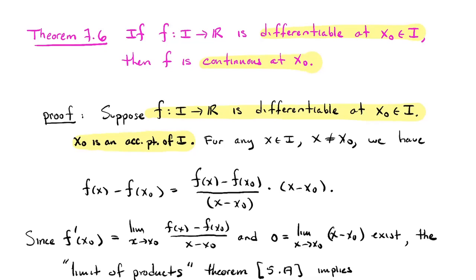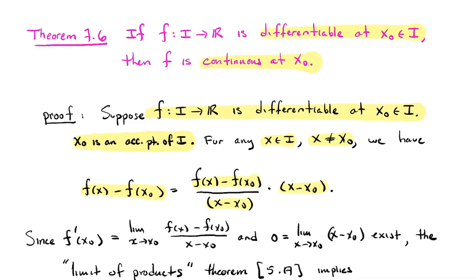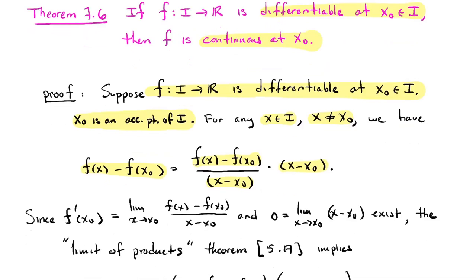I'm going to take a look at the difference f(x) − f(x₀). To show that f is continuous at x₀, I need the limit as x approaches x₀ of f(x) to equal the function value there. If I take some x in the interval other than x₀, I can write that difference as [f(x) − f(x₀)] / (x − x₀) times (x − x₀), since (x − x₀) over itself is one. Since the function is differentiable, the limit of the difference quotient exists and equals f prime of x₀. And certainly the limit as x approaches x₀ of (x − x₀) exists and equals zero.